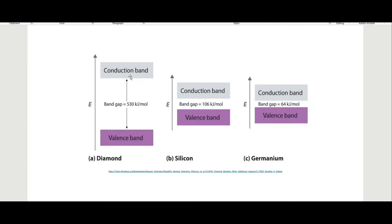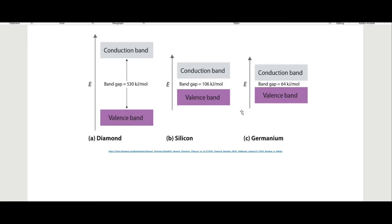Diamond, which is not a great conductor, has a large band gap — you need to put in a lot of energy to move electrons from the valence band to the conduction band. Silicon has a much smaller gap, and germanium is even smaller than that. Germanium is in the same group as silicon, just one period down, and both are natural semiconductors.